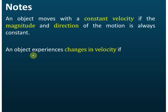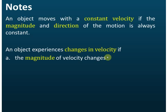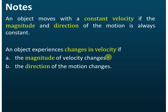An object experiences a change in velocity if the magnitude of velocity changes, or the direction of motion changes, or both change. This concept is important for understanding acceleration: if either magnitude or direction changes, the velocity changes — and acceleration is the measure of how fast the velocity changes.